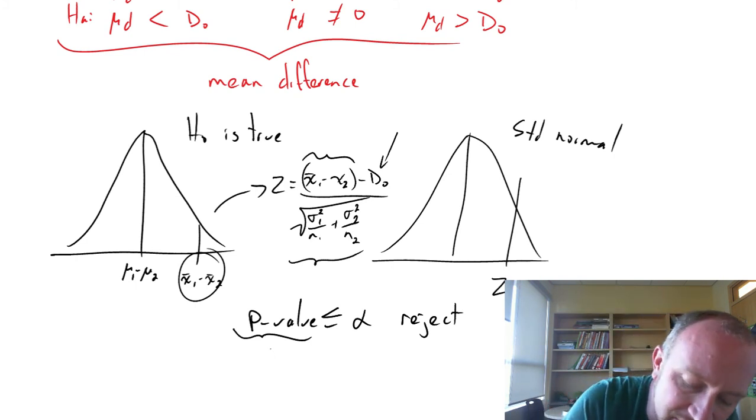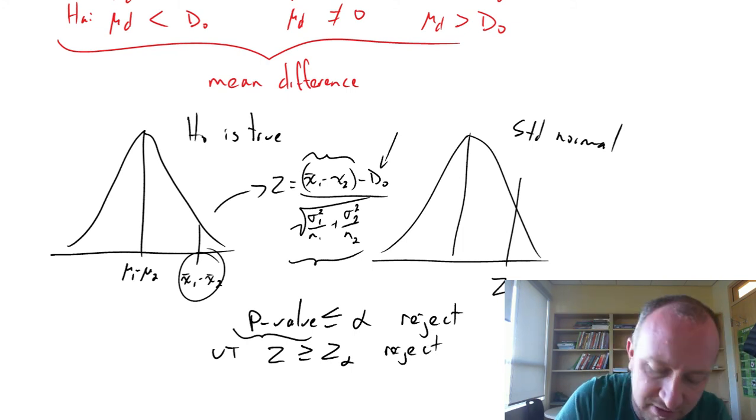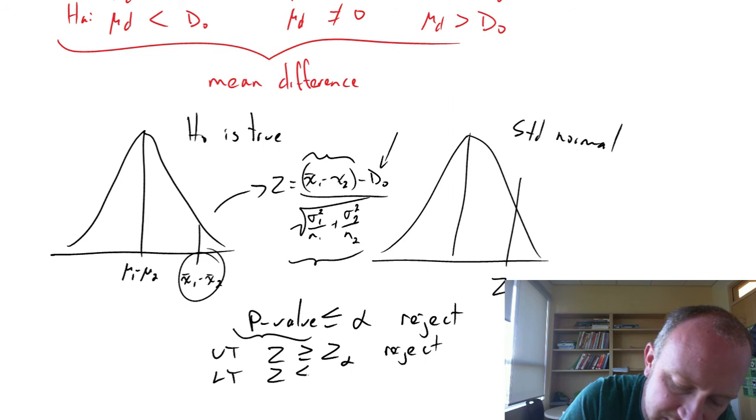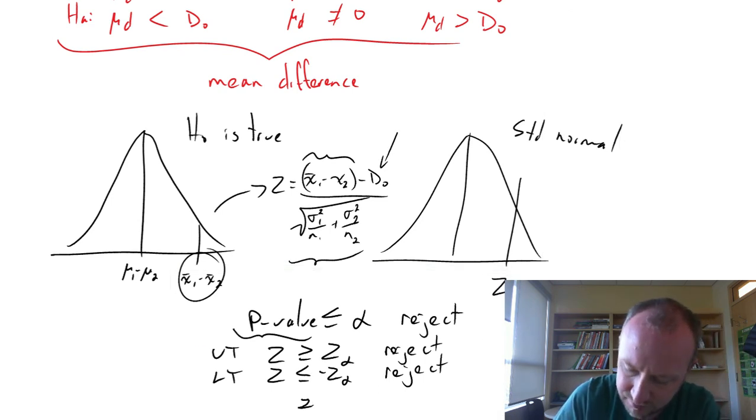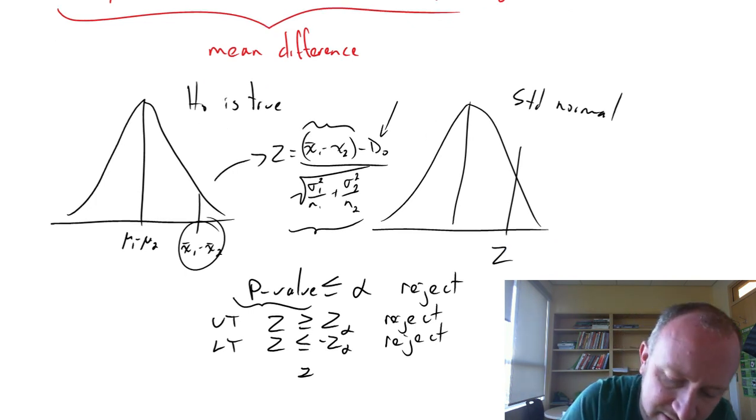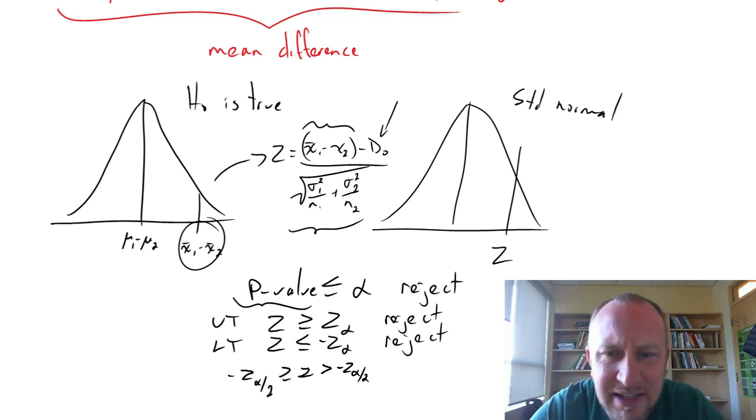And then all of the rejection rules for upper tailed tests: if this is an upper tailed test, we would reject if our test statistic is greater than the critical value. For a lower tailed test, we reject if it's less than the critical value. And for a two tailed test, we'll reject if it's greater than the upper critical value, or less than or equal to the lower critical value. So it gets a little messy down there, sorry about that.